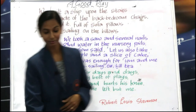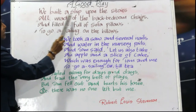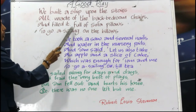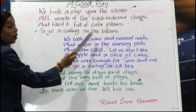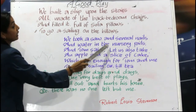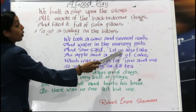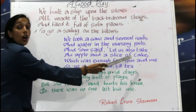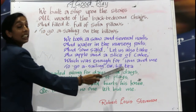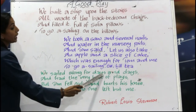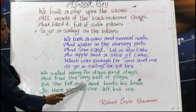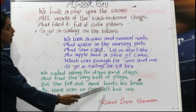Children, now let us recite the poem together. Are you ready? 'A Good Play. We built a ship upon the stairs, all made of the back bedroom chairs, and filled it full of sofa pillows to go a-sailing on the billows. We took a saw and several nails and water in the nursery pails, and Tom said let us also take an apple and a slice of cake, which was enough for Tom and me to go a-sailing on till tea. We sailed along for days and days and had the very best of place, but Tom fell out and hurt his knee, so there was no one left but me.'